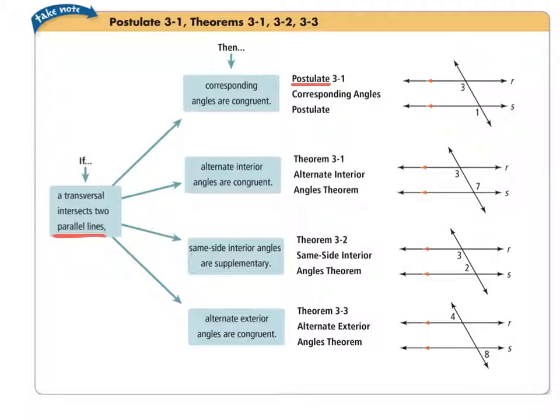So for example, in the diagram there, angle 3 and angle 1 are corresponding angles, so therefore they are congruent.